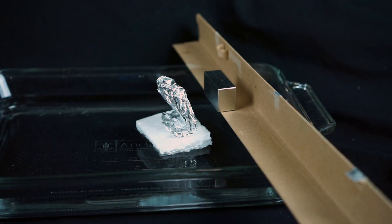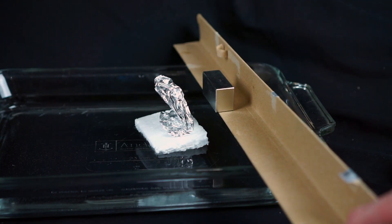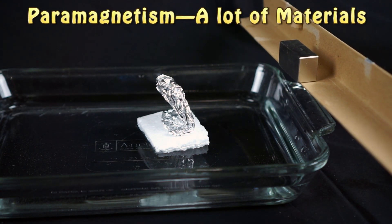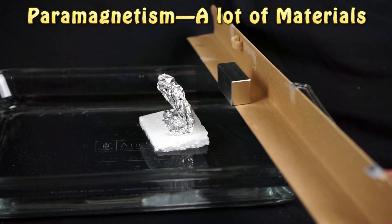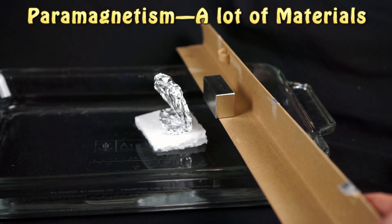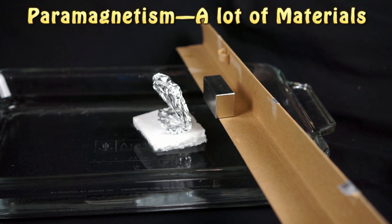And then a few materials like aluminum are paramagnetic. And paramagnetic means it's attracted to magnets. So now if I just bring my magnet near the aluminum, the aluminum will go towards it.